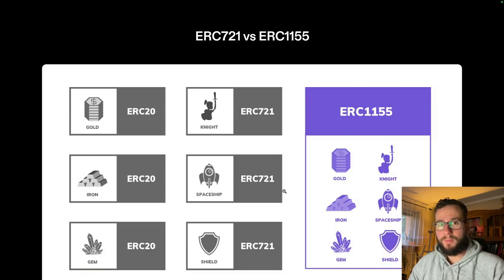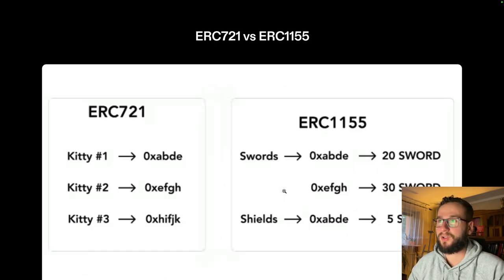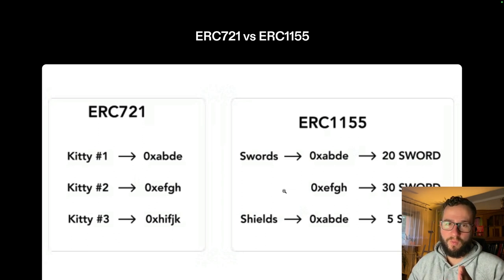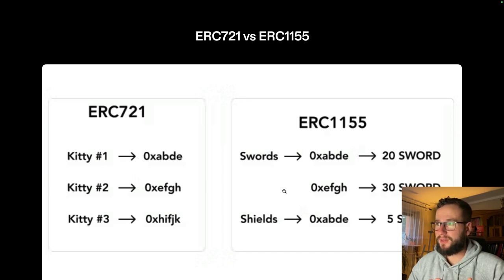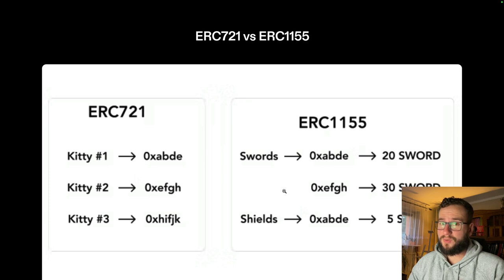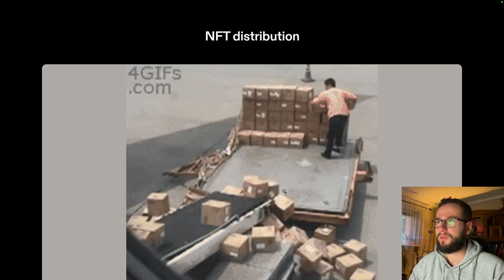In terms of development, there's not much difference between the two standards. But you have to make this decision before actually deploying your smart contracts. As a summary: with ERC-721, one token points to one specific item. With ERC-1155, one item can be owned by several addresses, and one address can even hold multiple copies of the same NFT.